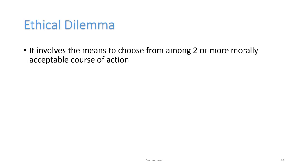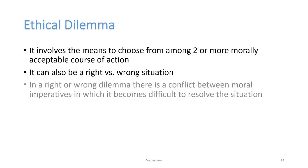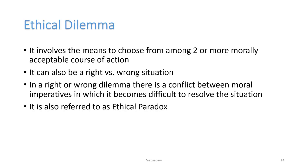An ethical dilemma involves the need to choose from among two or more morally acceptable courses of action — either option can be accepted, but there is a dilemma as to which one to opt for. An ethical dilemma is usually a right-versus-right or right-versus-wrong situation where there is always a conflict between moral imperatives, making it very difficult to resolve. That is the reason it is also referred to as an ethical paradox.